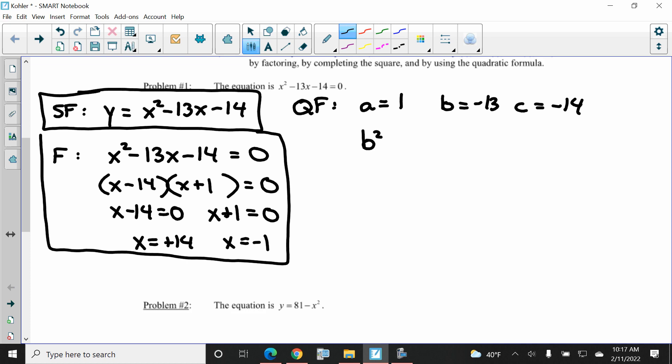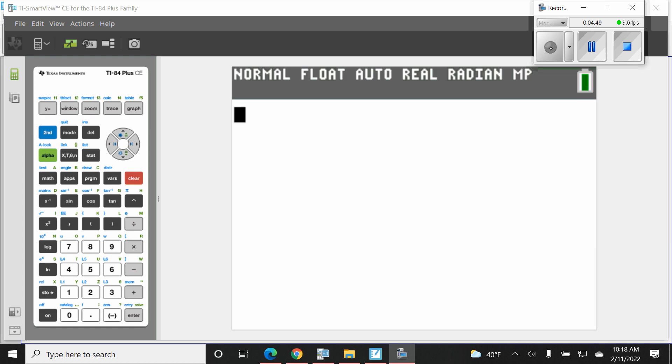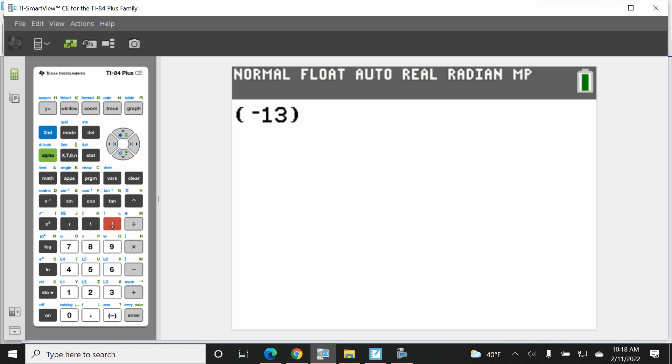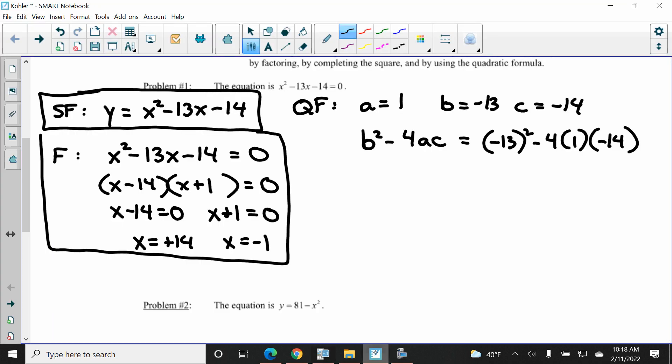When I do the quadratic formula, I should do the discriminant next. B squared minus 4AC, which really just means negative 13 squared minus 4 times 1 times negative 14. So we put that in our calculator.